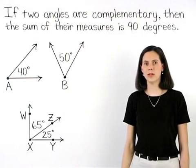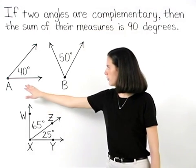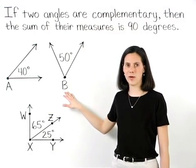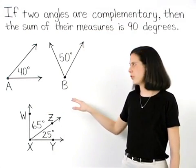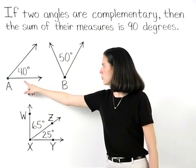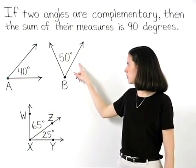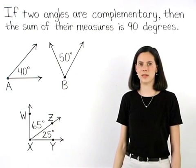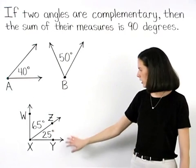For example, in the first diagram shown, angles A and B are complementary because the sum of their measures, 40 degrees plus 50 degrees, equals 90 degrees.